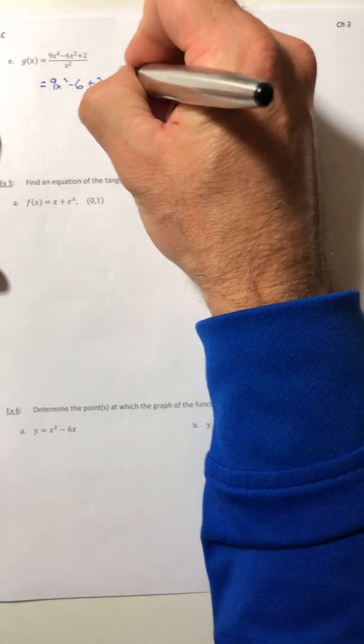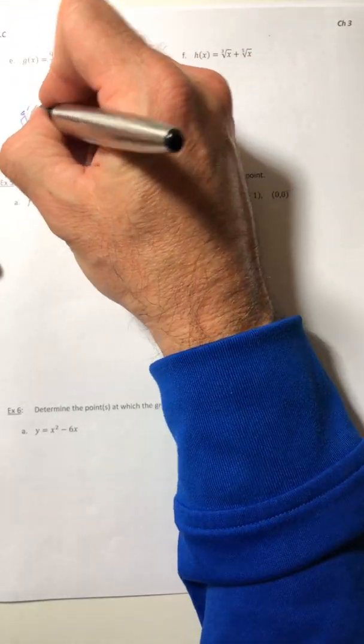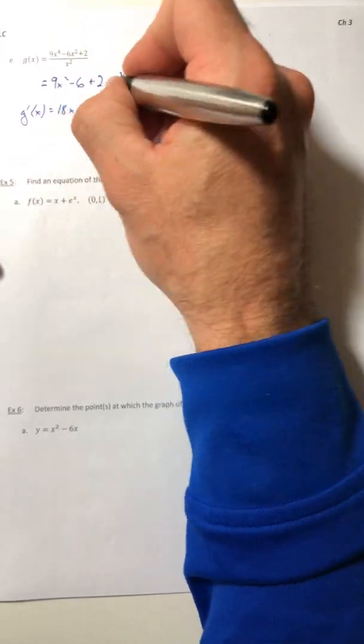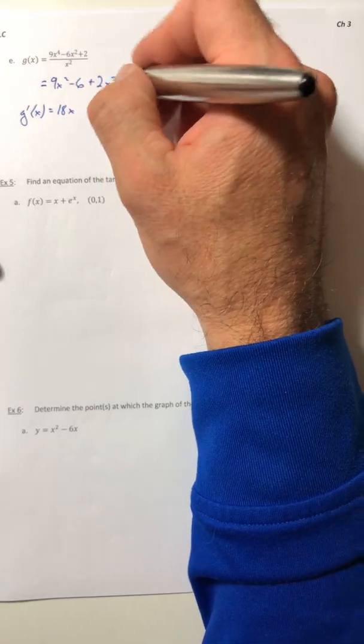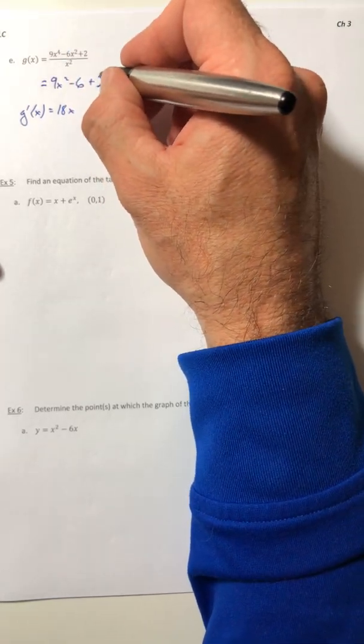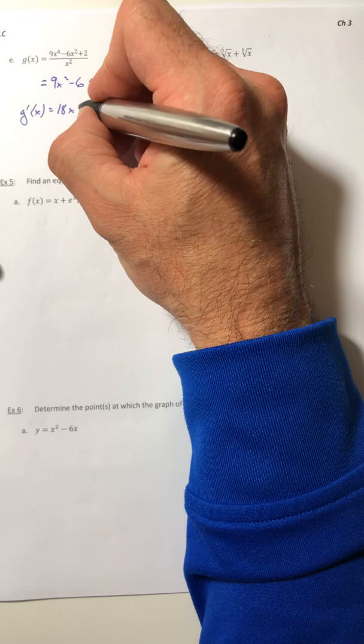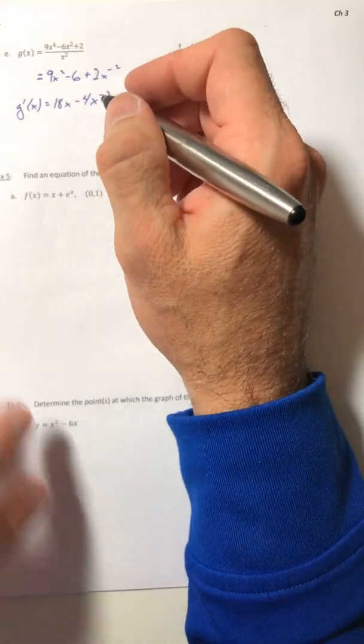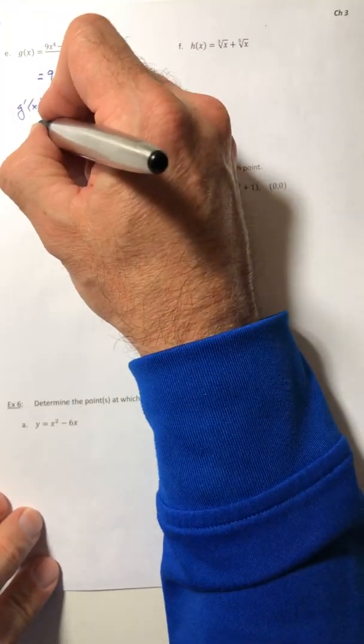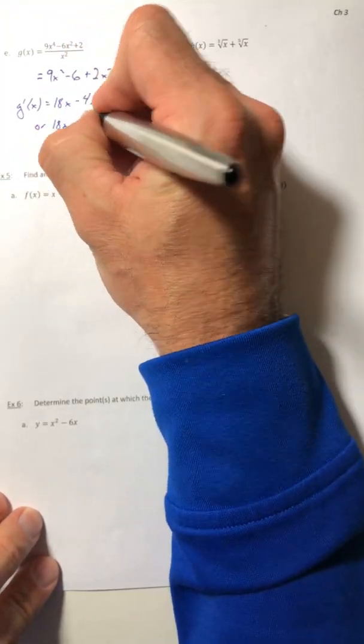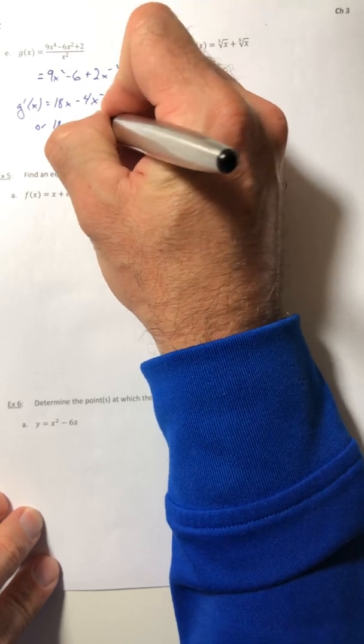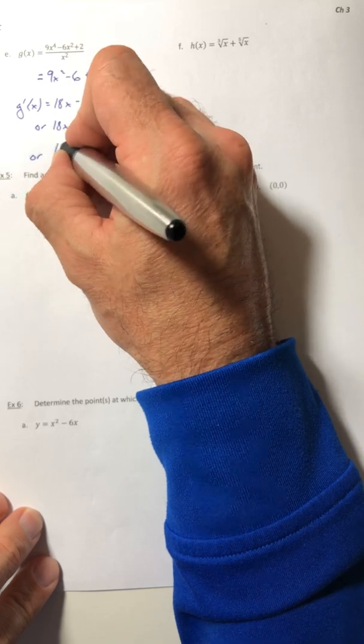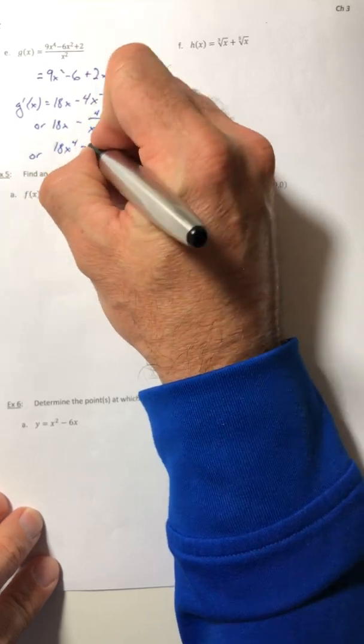Now you can do your derivative. So 18x, the 6 just goes to 0, the negative 2 pulls down and multiplies to the positive 2 so that'd be a negative 4x to the negative 3rd. You could if you wanted rewrite that and flip the x to the third down. If you really wanted to, you could keep going and get a common denominator and combine everything into one fraction.